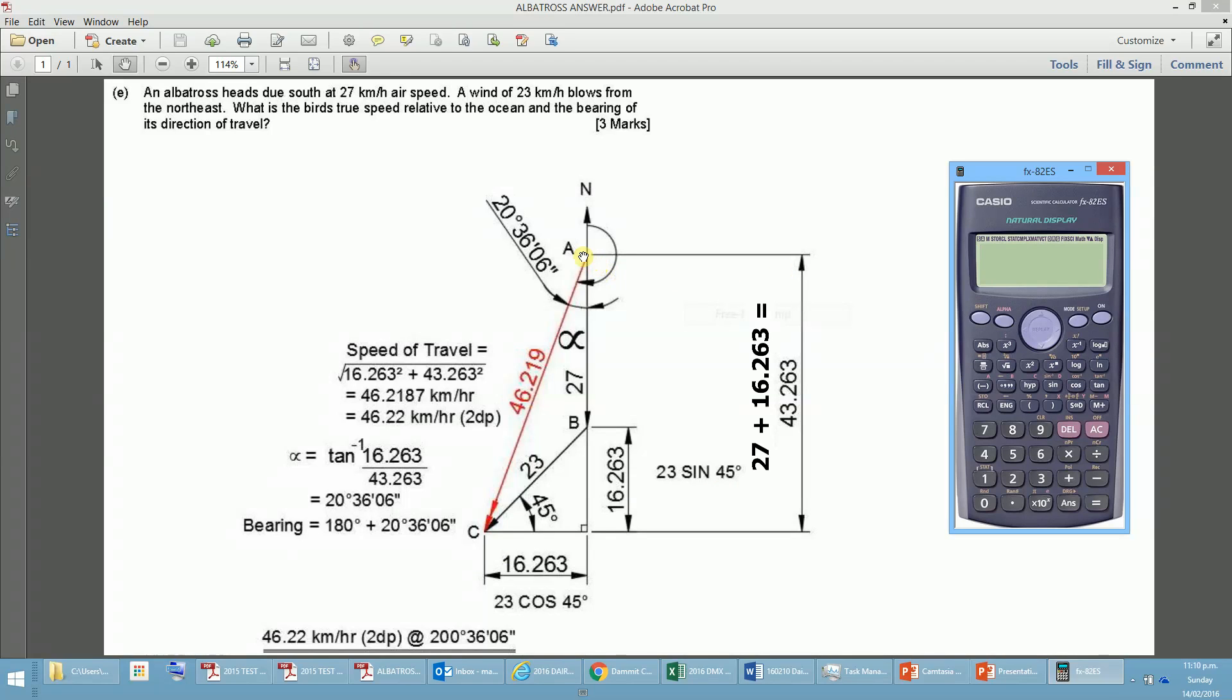So now we can work out the components of the resultant vector, which is typically shown with the two arrows here. And looking at this big triangle here, this is the AC, and out to the little right angle. Looking at the big triangle there, that will enable us to work out the speed. And we can see that we have got 16.263 east-west, and 27 plus 16.263, which is 43.263 north-south. So looking at the big triangle, we can now work out the resultant, which is, just using Pythagoras, 16.263 and 43.263 squared.